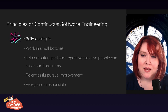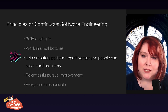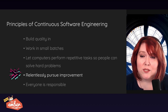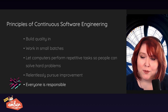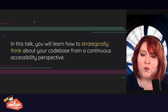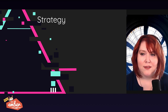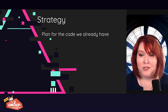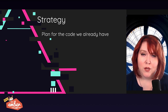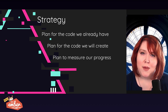The well-established principles of continuous software engineering remind us to build quality in, to work in small batches, to let computers do the tedious stuff and humans do the hard stuff, to always be improving, and that everyone is responsible for doing these things. In this talk, you will learn the essential points of strategy for continuous accessibility. This three-part strategy includes a plan for the code we already have, a plan for the code we'll have in the future, and a plan for how to measure our work — and we'll discuss why that is so important.